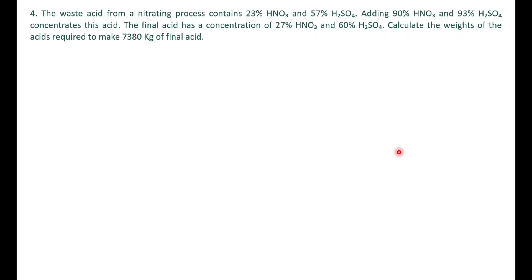Moving on to the next problem on mixing. The waste acid from a nitrating process contains 23 percent nitric acid and 57 percent sulfuric acid — totaling 80 percent, so the remaining 20 percent is water. We are adding a 90 percent nitric acid solution (10 percent water) and a 93 percent sulfuric acid solution (7 percent water). These are two separate acid streams. The final acid has 27 percent nitric acid and 60 percent sulfuric acid.